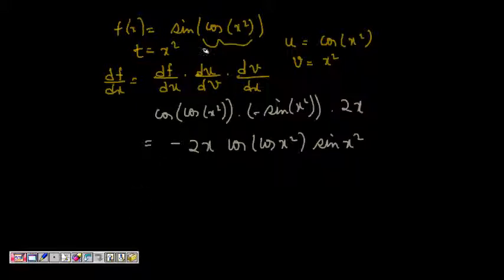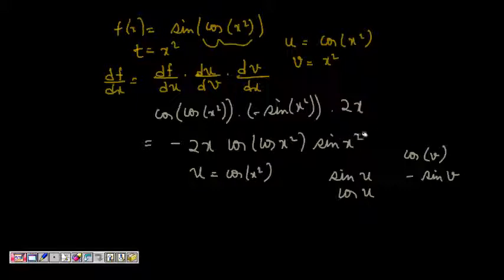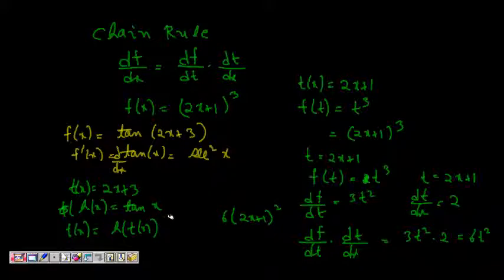To summarize: for a composite function like sine of something, take the inside as u, differentiate sine u to get cos u, then continue differentiating inward layer by layer — cos x squared gives minus sine, and x squared gives 2x. This is how the chain rule works. I hope you understand the chain rule and that it helps. Thanks.